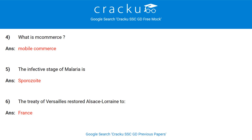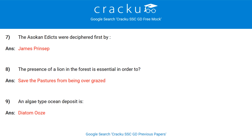What is m-commerce? Mobile commerce. The infective stage of malaria is sporozoite. The Treaty of Versailles restored Alsace-Lorraine to France. The Ashokan edicts were deciphered first by James Princep. The presence of a lion in the forest is essential in order to save the pastures from being overgrazed.